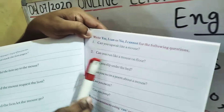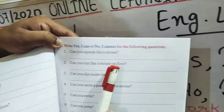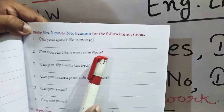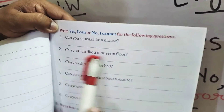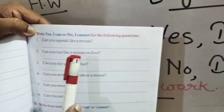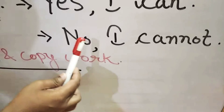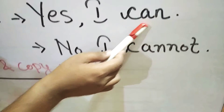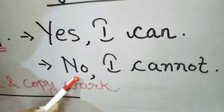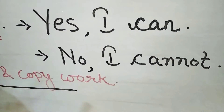Number two: Can you run like a mouse on the floor? क्या आप जमीन में mouse की तरह दौड़ सकते हैं? अगर आप दौड़ सकते हैं तो आप Yes, I Can लिखेंगे; अगर नहीं दौड़ सकते हैं तो आप लिखेंगे No, I Cannot.